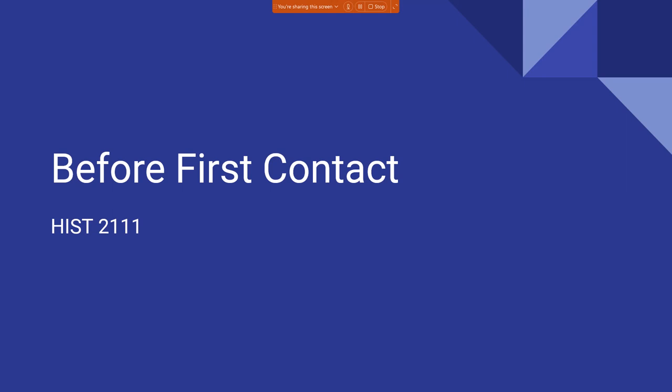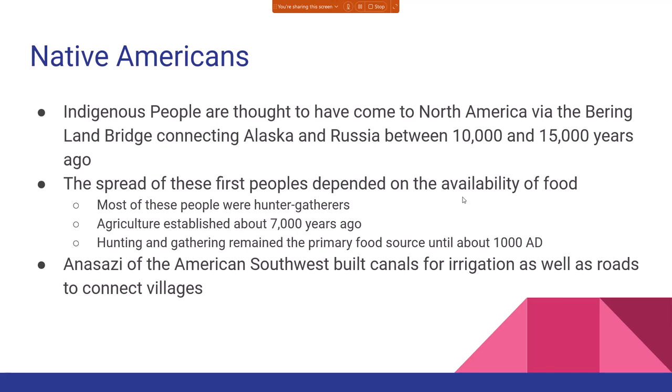Good morning. This is our first lecture before first contact, and what we're going to talk about in this lecture is the three groups of people that come together to make the society we live in today — that's the Native Americans, Europeans, and West Africans. Without those three groups, I don't think you really have the United States we live in today. So I'm going to start with the indigenous people, the Native Americans.